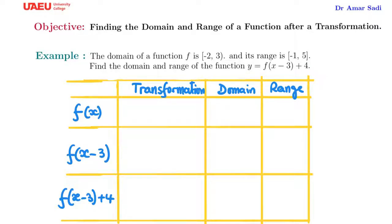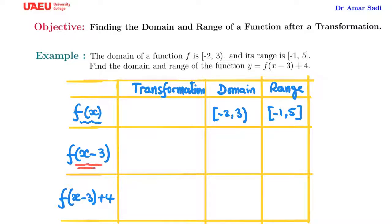The best way to do that is perhaps through a table. We start with a function f whose domain is [-2, 3] and the range is [-1, 5]. Then we take f(x - 3): this minus 3 means a shift to the right by 3 units.